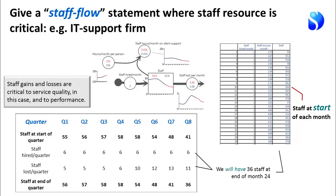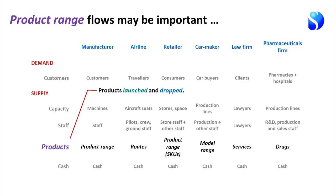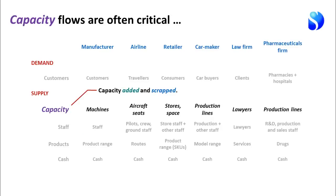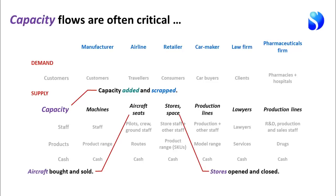Staff gains and losses are critical to service quality in this case and in many others, and therefore critical to performance. Product range flows may be important too — products launched and dropped, routes added and closed. For a drug company, we want to know about the number of drugs being launched and the number going off patent. Capacity flows may be critical: what capacity has been added and scrapped? Aircraft bought and sold for the airline, or for a retailer, how many stores opened and how many stores closed?